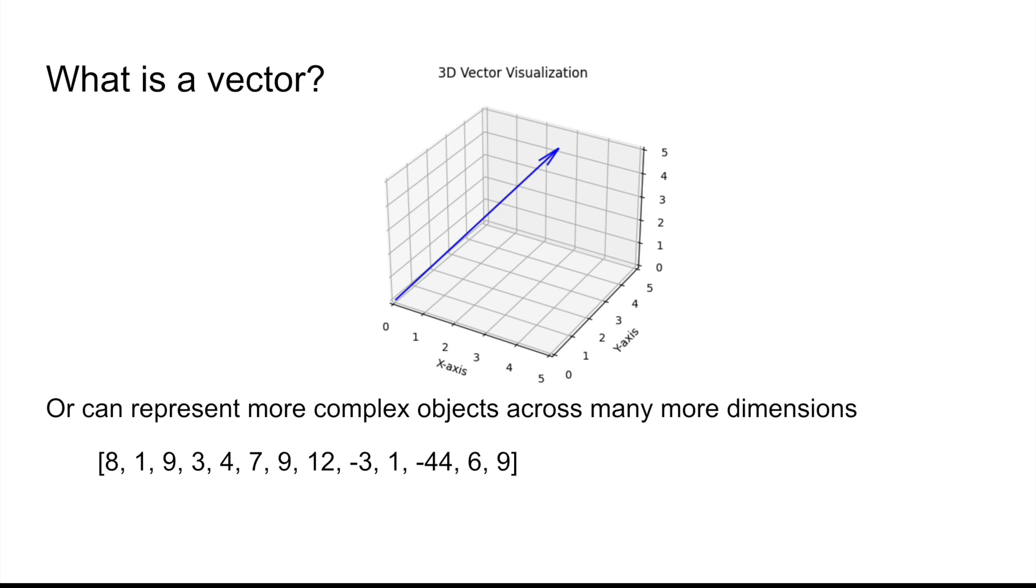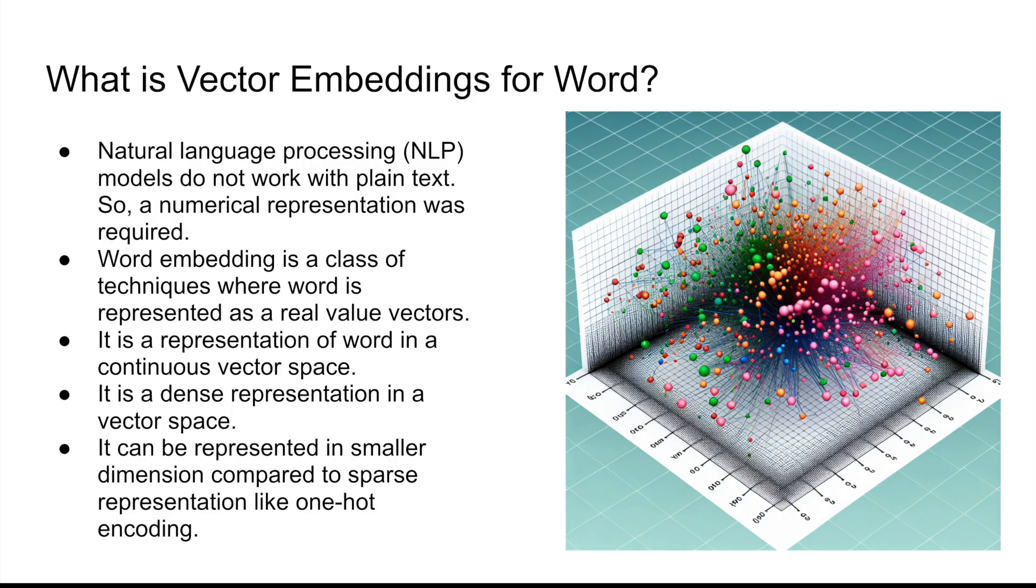So this is the power of how you can represent vectors. You can represent complex objects in form of vectors across different dimensions, which is what you see in the below example. Now what are vector embeddings? This is something that you have to understand if you have to really appreciate the advances of natural language processing. So NLP models don't work with plain text.